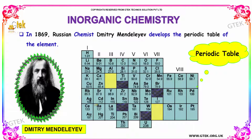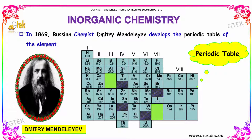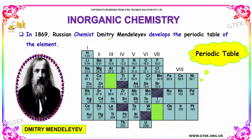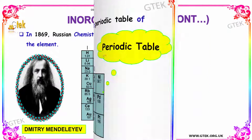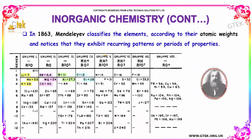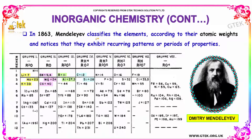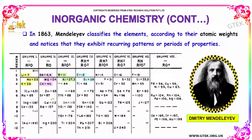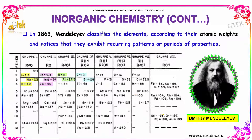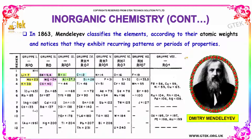The person who derived and defined this periodic table is the great chemist Dmitry Mendeleev. In 1869, Russian chemist Dmitry Mendeleev developed the periodic table of the elements. In 1863, Mendeleev classified the elements according to their atomic weight and noticed that they exhibit recurring patterns, or periods, of properties. This is the table derived by the great scientist Dmitry Mendeleev.